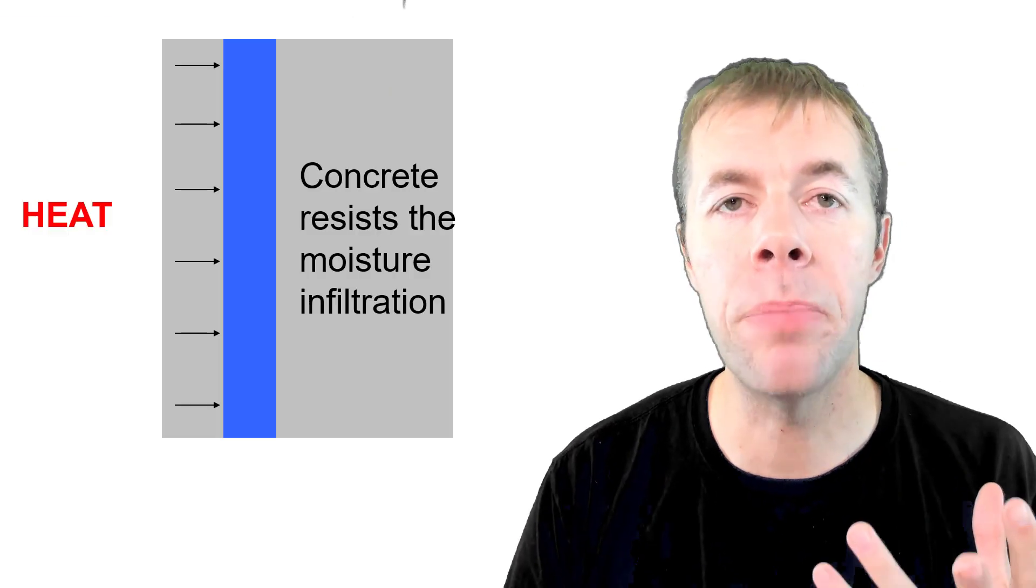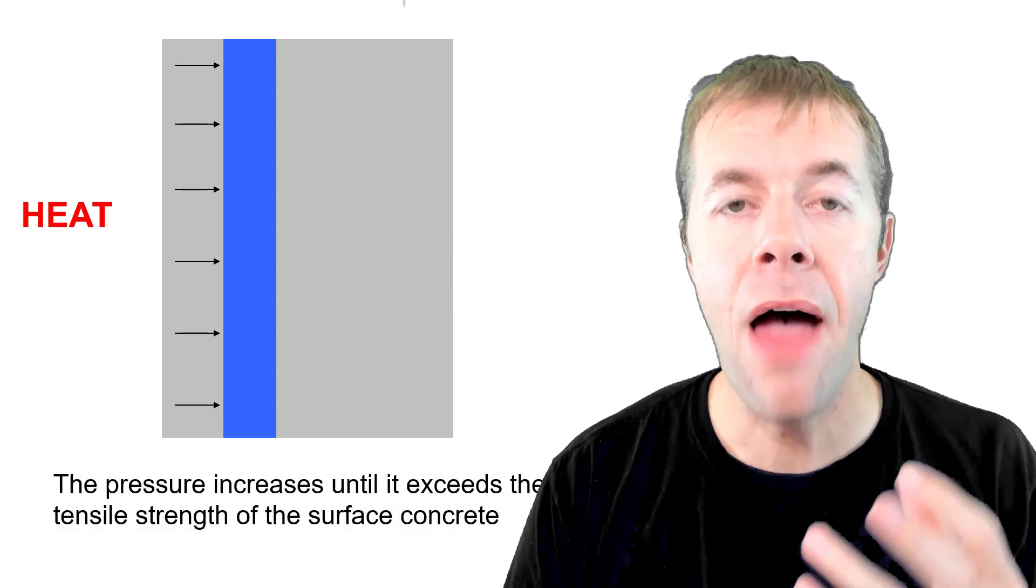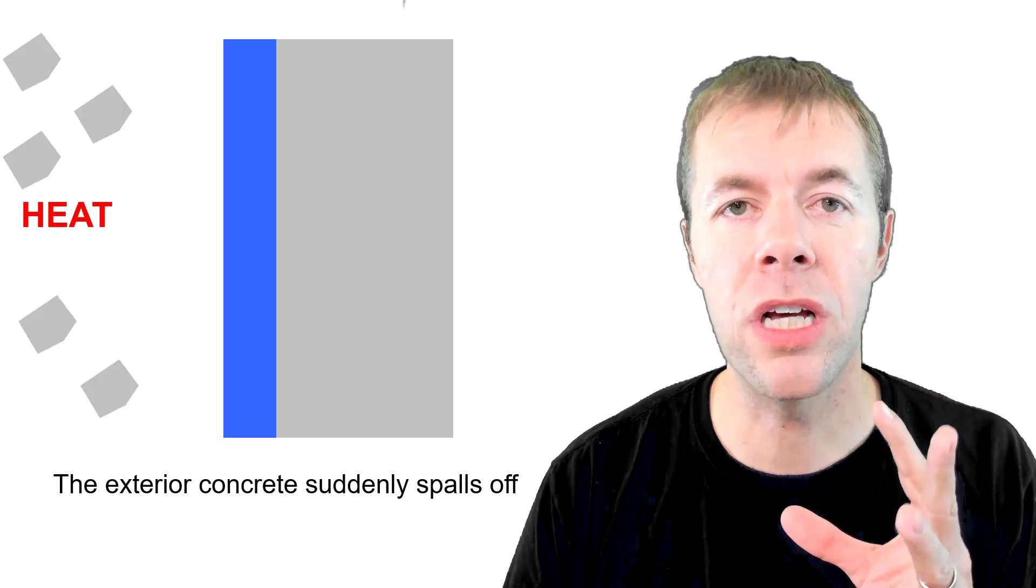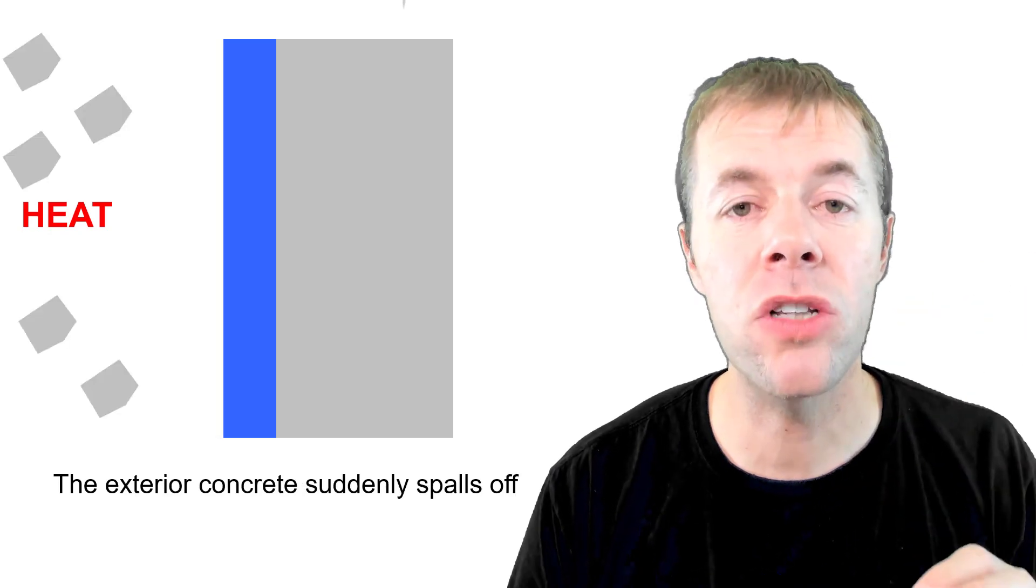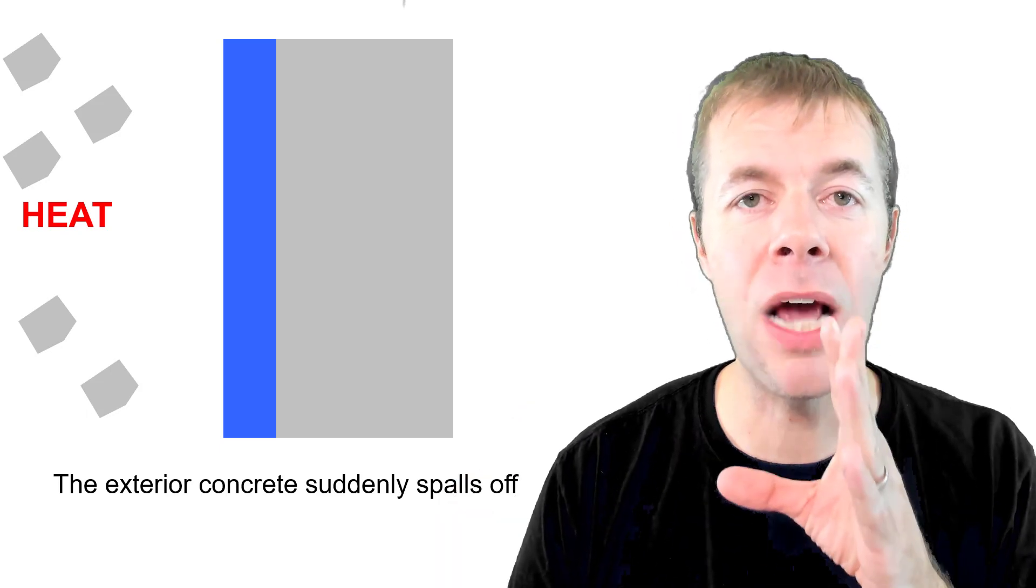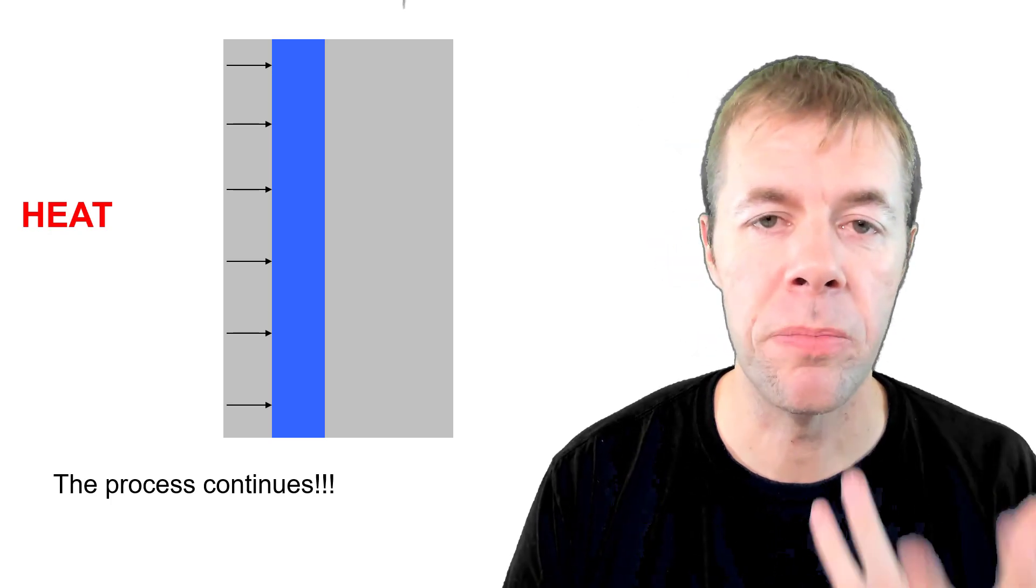We don't want water coming in, right? Well as that water builds and builds, those pressures are going to grow and grow inside. When the pressure exceeds the tensile strength of the concrete, the surface of the concrete is going to just blow off. It looks like it suddenly explodes off. Now that surface, that heat is now exposed to the water again, so it continues. The water evaporates, it goes inwards, the pressure builds up, and it spalls again.